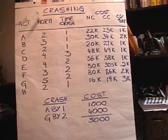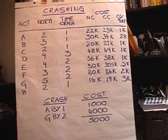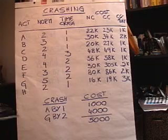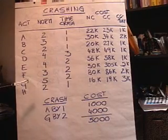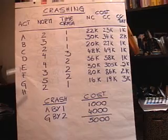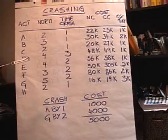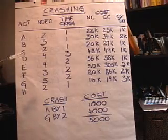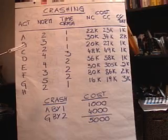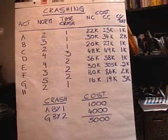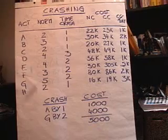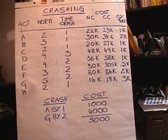What this video is about is crashing projects — that just means reducing the amount of time for a project to take. For example, the normal time on this project was 15 days, but let's say that we'd like to get it down to 12 days instead. So we need to crash by a total of three days on that critical path. This is a common occurrence if you need to complete your project faster than the normal time.